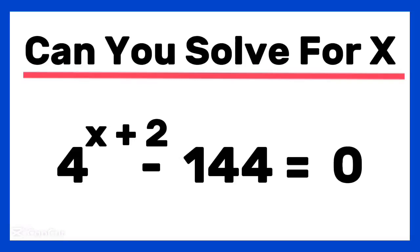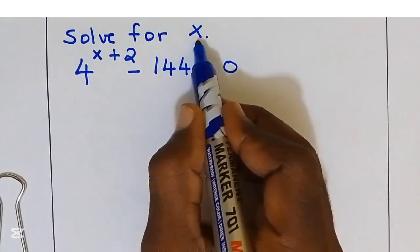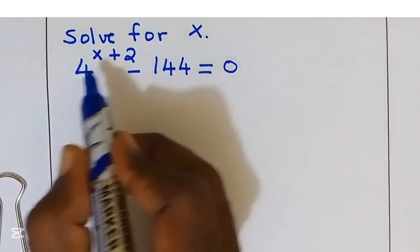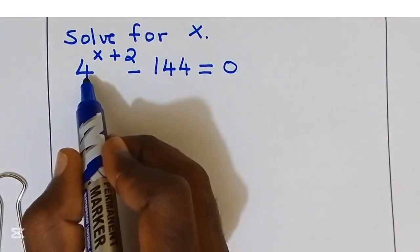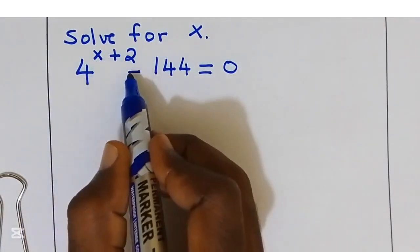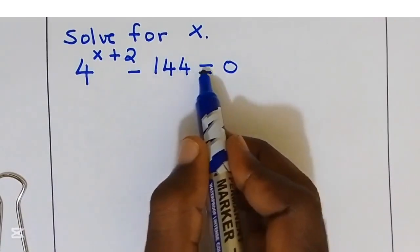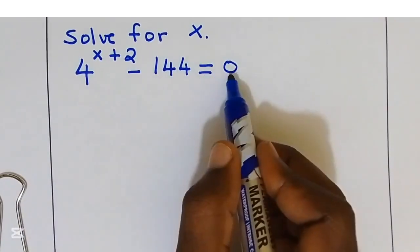Hello, welcome. My name is Walter. We have an exponential equation here. We are going to solve together. We are supposed to solve for x, given that 4 to the power of x plus 2, take away 144, is equal to 0.